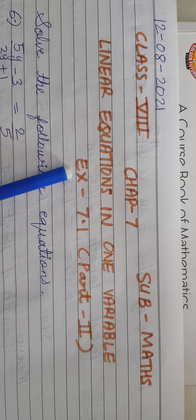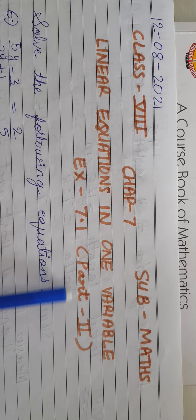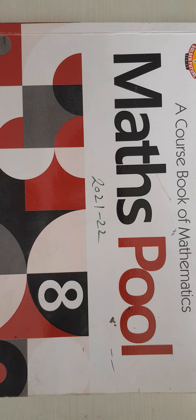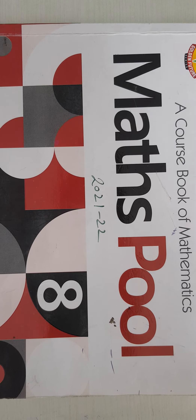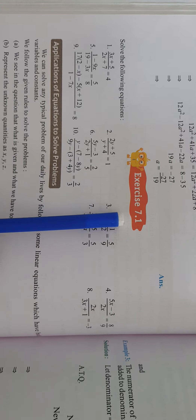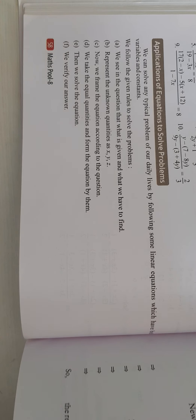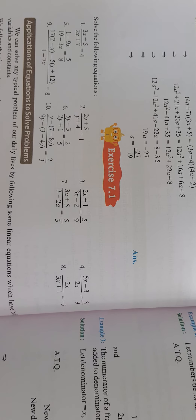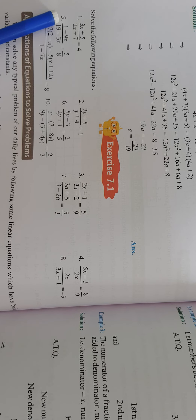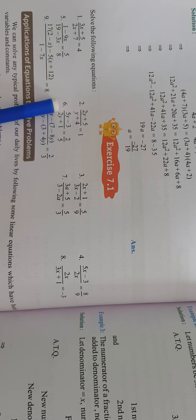Today we do exercise 7.1 part 2nd. Now first see in the book — this is your maths book, maths of class 8th. Open exercise 7.1. This is exercise 7.1 on page number 58. In part 1, we already done question number 1 to 5. So today we start from question number 6.